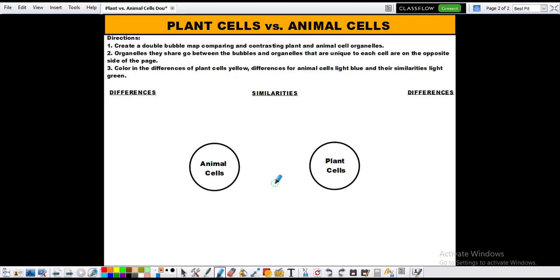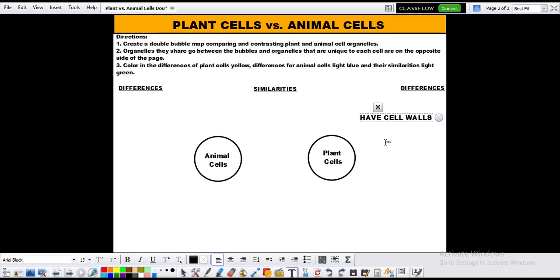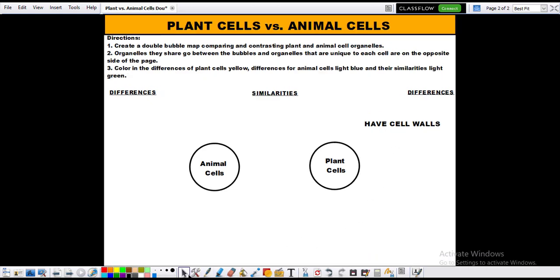All right. So we know that plant cells have structures called cell walls. OK, so that's what we're going to write there. They have cell walls. And then on the opposite, we could just write unique animal cell organelles, but we haven't really dove into those. So I'm not going to ask you to do that.